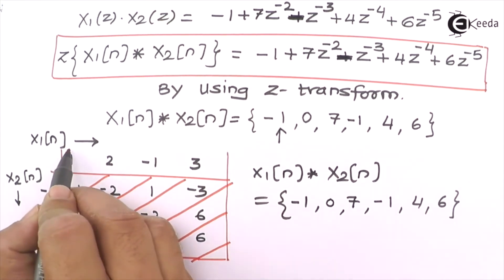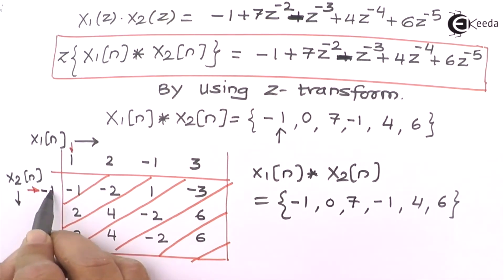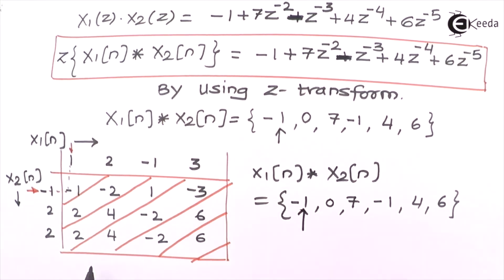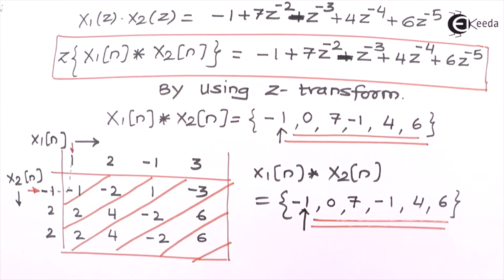The origins of X1[N] and X2[N] coincide at the first element, so the origin of our convolution is also at the first element. The tabular method answer matches the Z transform result. The biggest advantage of Z transform is that we can take the Z transform of individual signals, multiply them, and then take the inverse Z transform of the result to get the convolution sum of two signals. This is a powerful tool for solving convolution problems.